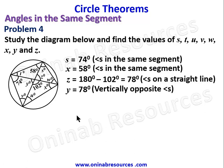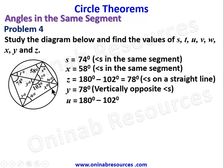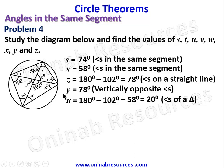We've found x, y, z, and s. Next we find u. Since we have x equal to 58 degrees and this angle is 102 degrees, the sum of u, x, and 102 must give 180 degrees — angles of a triangle. So u is 180 minus 102 minus 58, which gives u equal to 20 degrees.